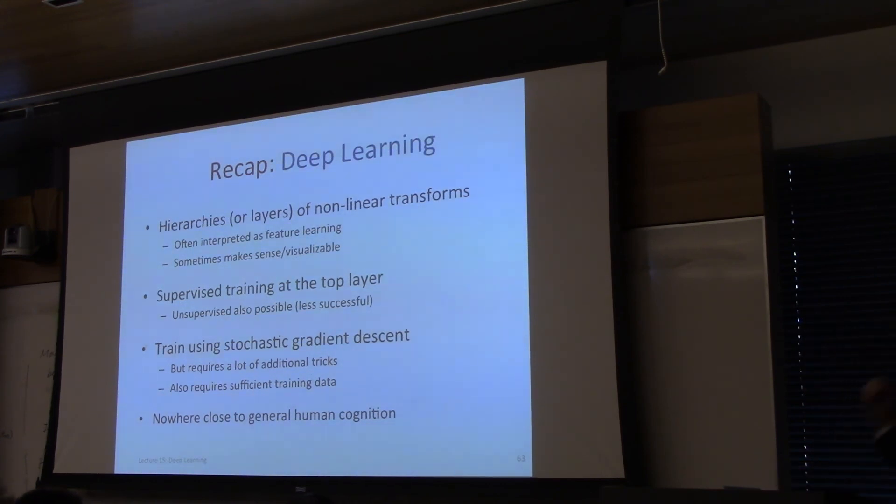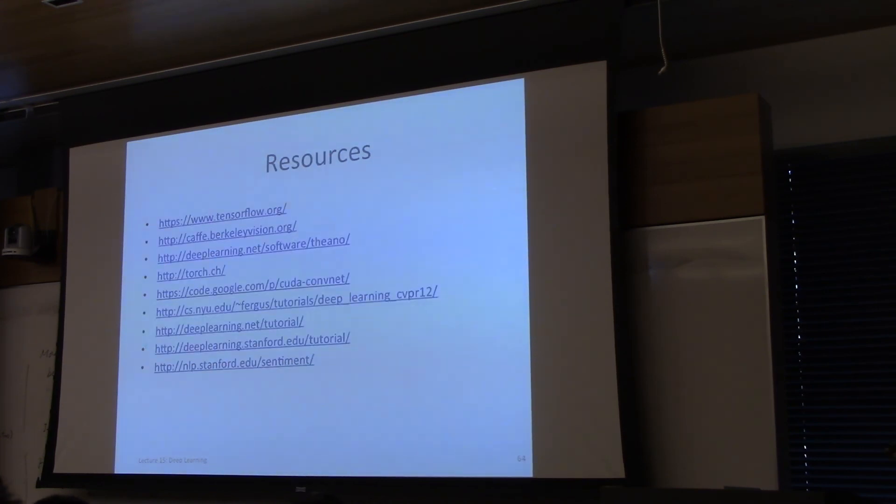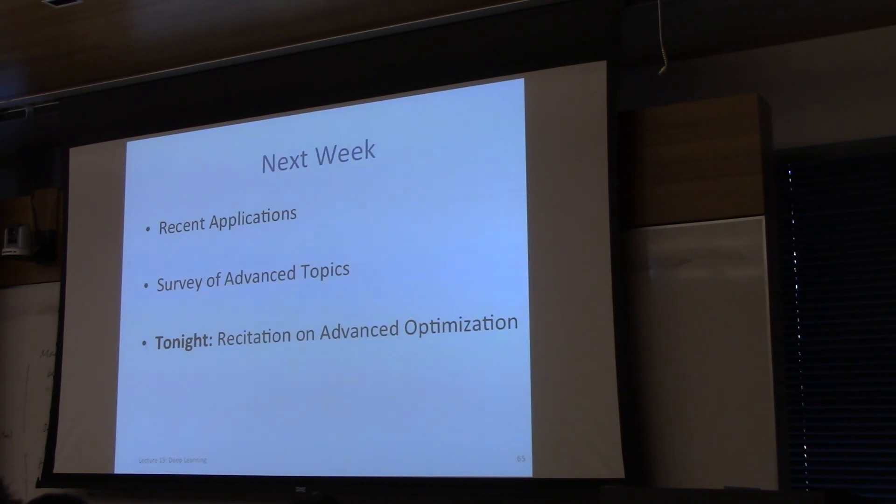Okay, so that's the recap. Sorry, that was a little fast at the end. Deep learning is basically a method of learning hierarchies or layers of nonlinear transforms for the raw inputs. You can interpret this as feature learning. Some connections, sometimes you can visualize this, some connections to biology, biologically inspired methods and observations. Most of the stuff that we talked about today is supervised learning where you have supervised labels at the top. Unsupervised methods are also possible but just thus far far less successful and you train using stochastic gradient descent plus chain rule plus lots of tricks. So that's it. If you want more resources here's a bunch of, here's a list. And next week we'll be looking at recent applications survey advanced topics and tonight is a recitation on advanced optimization.